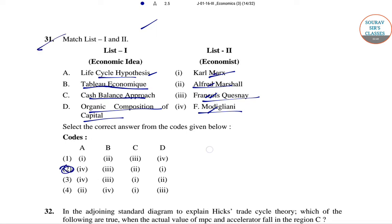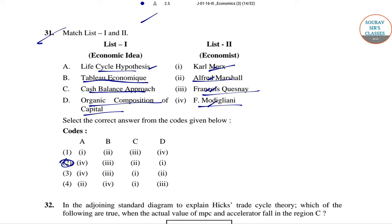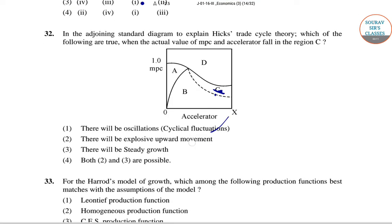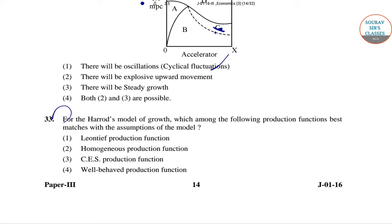Question 32: In the standard diagram explaining Hicks' trade cycle theory, when the actual values of MPC and the accelerator fall in region C, there will be oscillation or cyclical fluctuation.